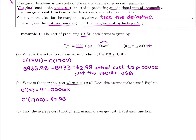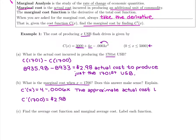That gives $2.98 — so much faster than plugging two numbers into the longer total cost formula. We just take the derivative and plug one number in. For the interpretation: plugging 1,700 into the marginal cost approximates the actual cost. It might not always be perfect, but it estimates it well.